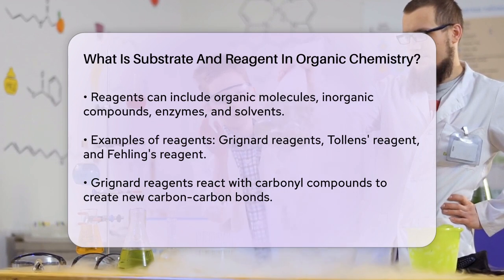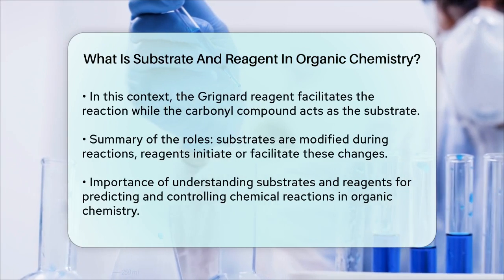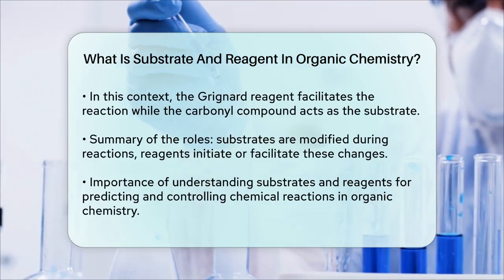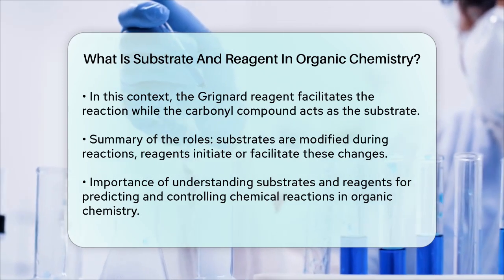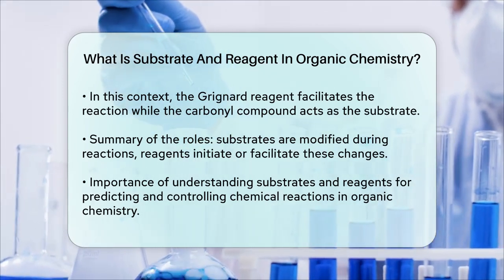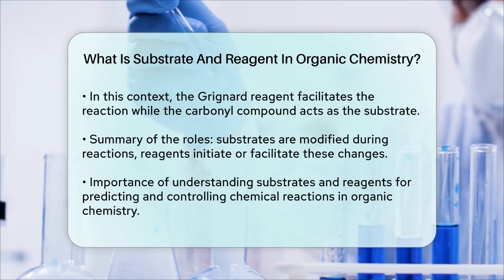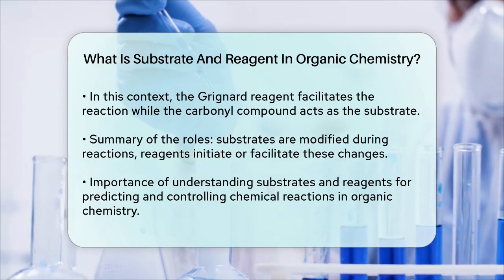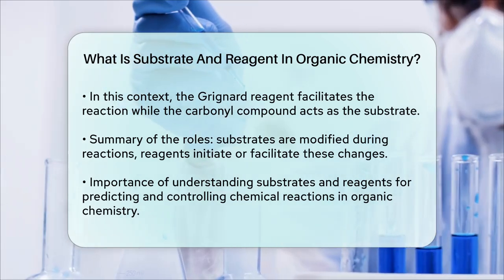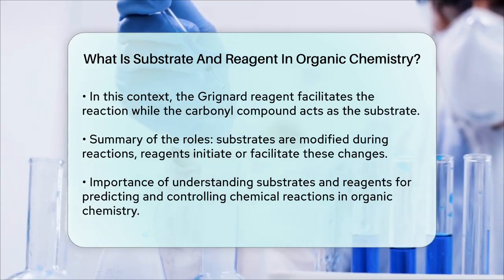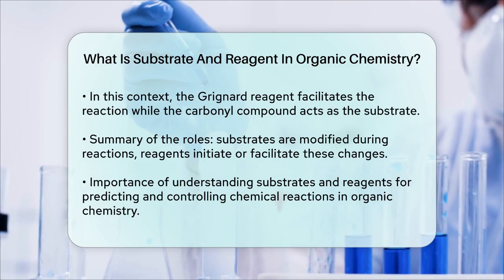Here, the Grignard reagent acts as the catalyst or the substance that facilitates the reaction, while the carbonyl compound acts as the substrate that undergoes the chemical change. In summary, the substrate is the molecule that is chemically modified during a reaction, while the reagent is the substance that initiates or facilitates this change. Understanding these roles is crucial for predicting and controlling the outcomes of chemical reactions in organic chemistry. Whether you're dealing with enzyme-catalyzed reactions or synthetic organic chemistry, knowing what substrates and reagents are and how they interact is key to mastering these processes.